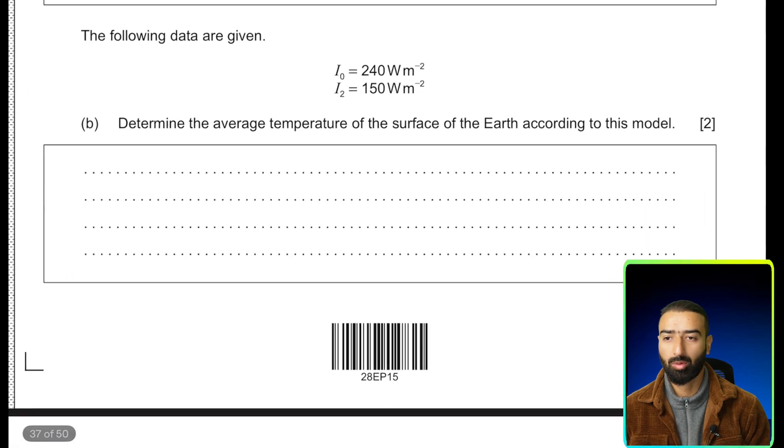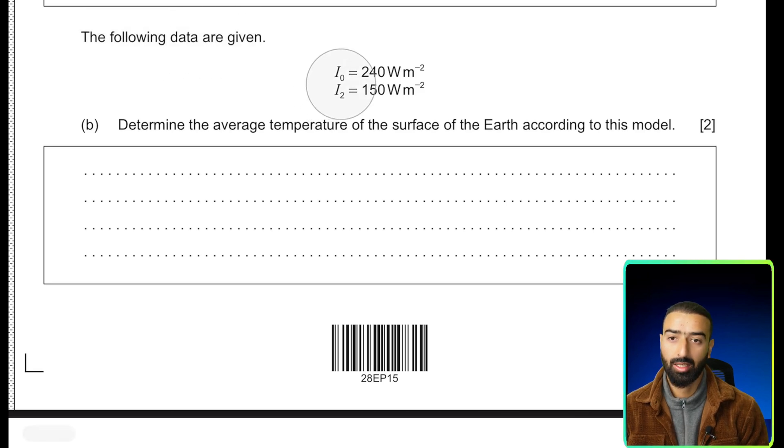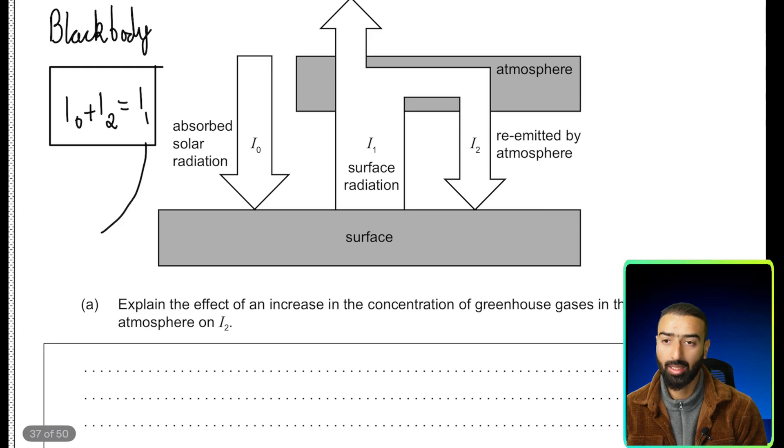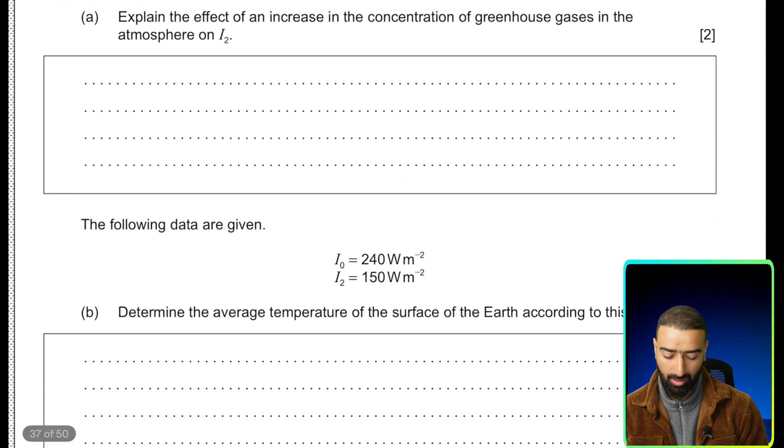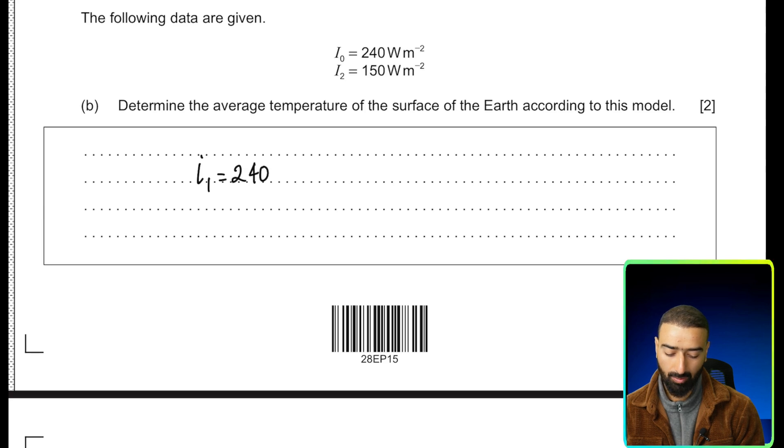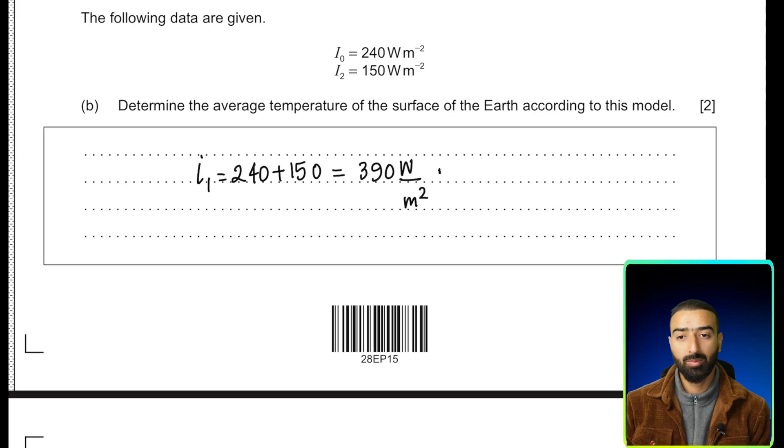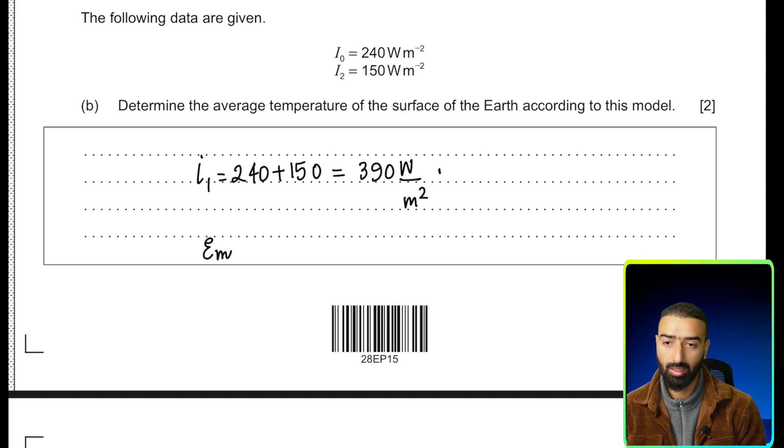Let's move on to the second part of the problem. The following data are given: I0 and I2. Determine the average temperature of the surface of Earth according to this model. So if I0 and I2 is given to us, we can use them to find I1. So I1 is going to be simply 240 plus 150, and that's a value of 390 watts per meter square. This means that the Earth emits 390 joules per second per meter square. We also realize that Earth acts as a black body. If that's the case, its emissivity is equal to 1.